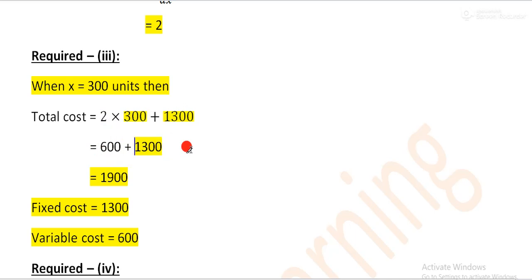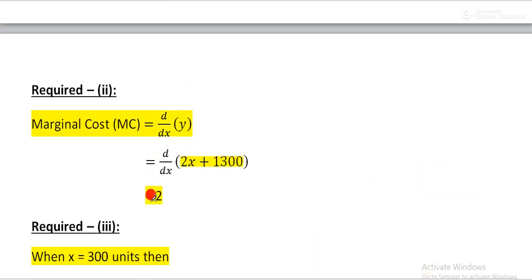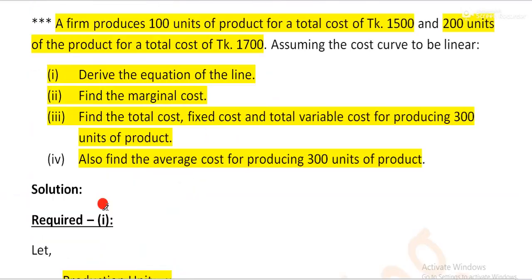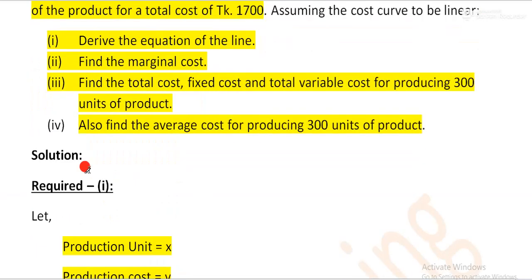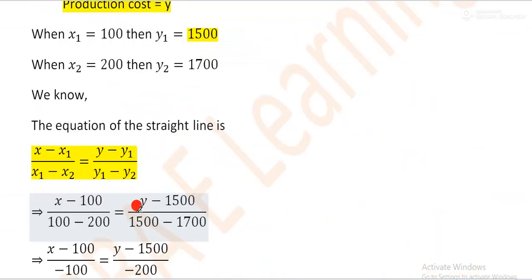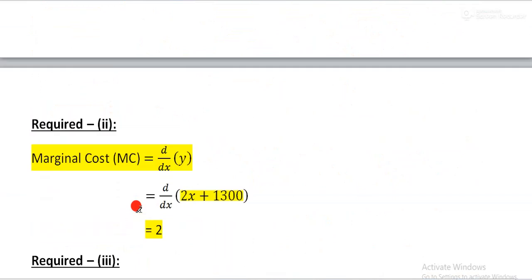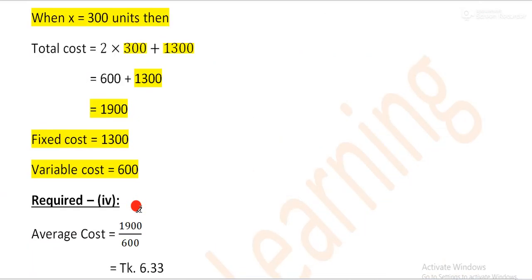The last step gives us the fixed cost. The fixed cost is determined from the equation. Also, find the average cost for 45,000 units of product. As for the average cost, it can be found from the total cost.